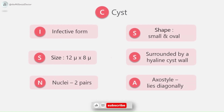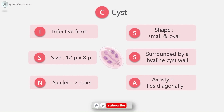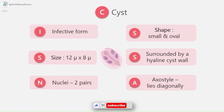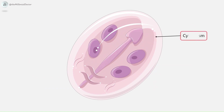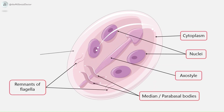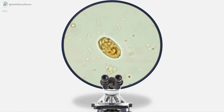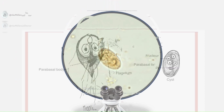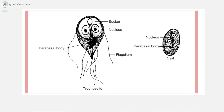The cyst form is the infective form of the parasite. The cyst is small and oval, measuring 12 micrometers by 8 micrometers, and is surrounded by a hyaline cyst wall. Its internal structure includes two pairs of nuclei grouped at one end; a young cyst contains one pair of nuclei. The axostyle lies diagonally, forming a dividing line within the cyst. Remnants of the flagella and the sucking disc may be present in the young cyst. The diagram shows a comparison between the trophozoite form and the cyst form.